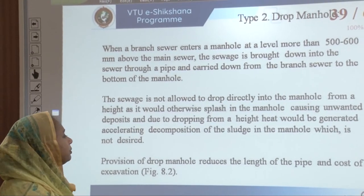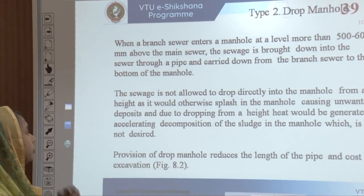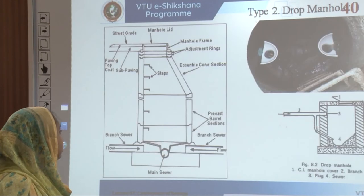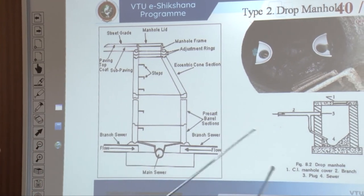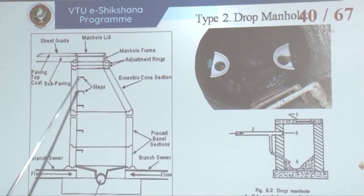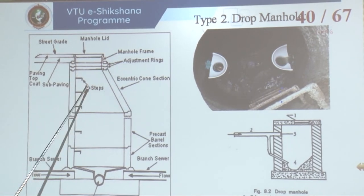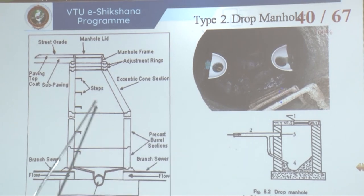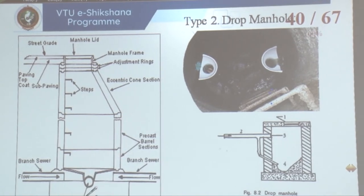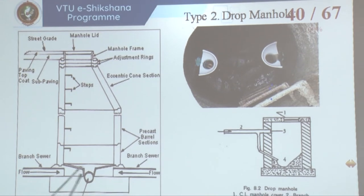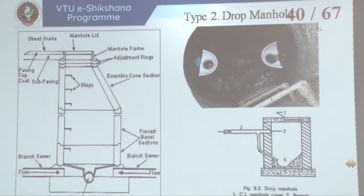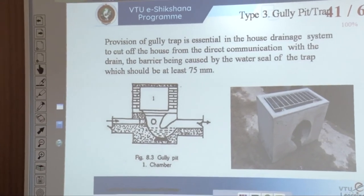The drop hole provision decreases the length of the pipe and cost of excavation compared to the manhole. The drop manhole has ladders or steps for maintenance and a manhole lid. You can come down to the branch sewer, which has the main sewer connected, and a flow pipeline is given as a branch sewer again to see how exactly water could move in terms of excess water.